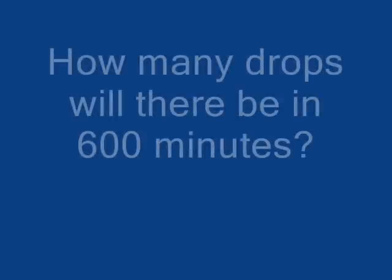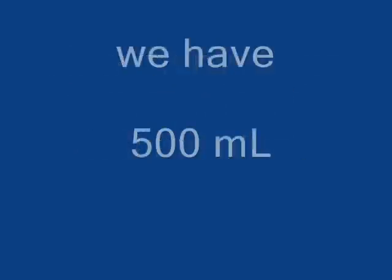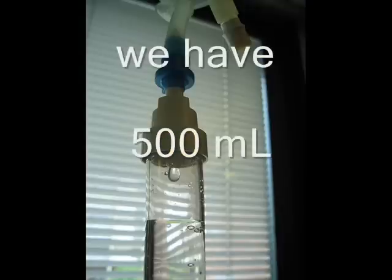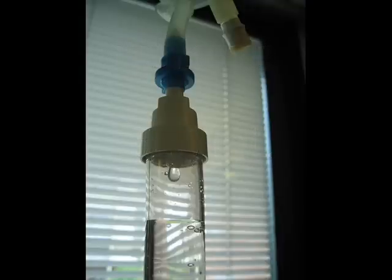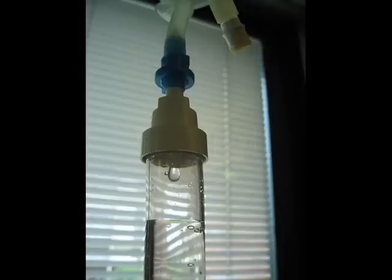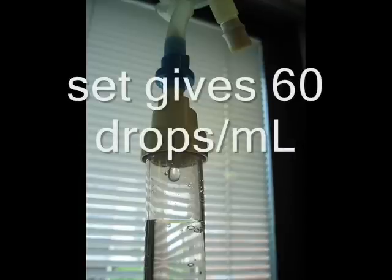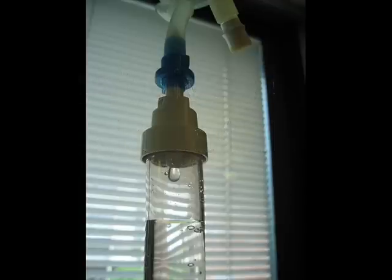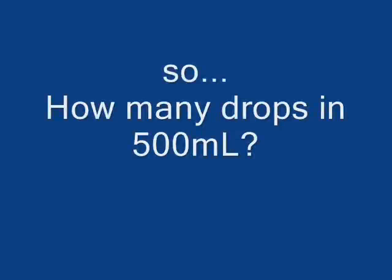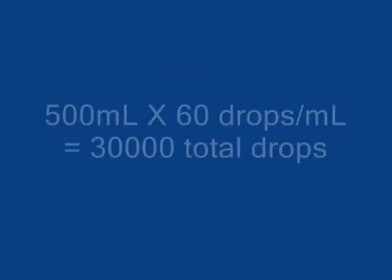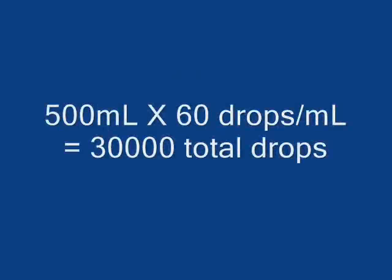We now have to ask: how many drops will there be in 600 minutes? We know we have a total volume of 500 ml and our giving set delivers at 60 drops per ml. So, what will be the total number of drops in 500 ml? 500 ml times 60 drops per ml will give us 30,000 drops.